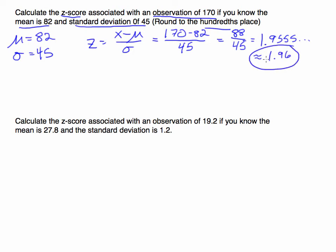If it's positive, remember z-score is also telling you direction. Since this is a positive z-score, we know we are to the right of the mean. So we could say that if you take 1.96 standard deviations and add it to the mean, you would be at this observation of 170.